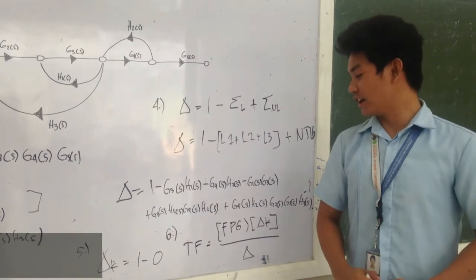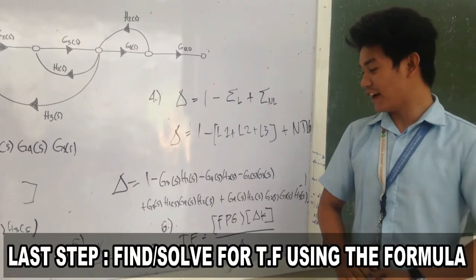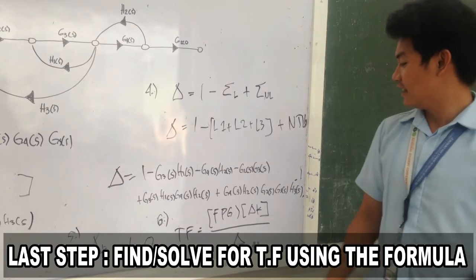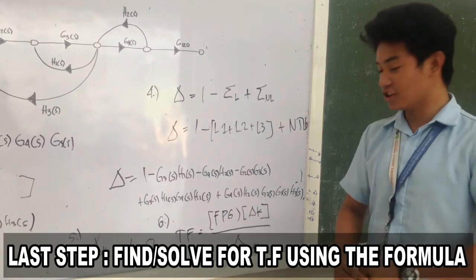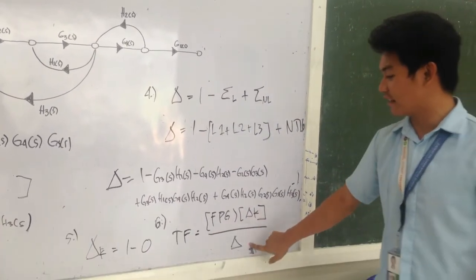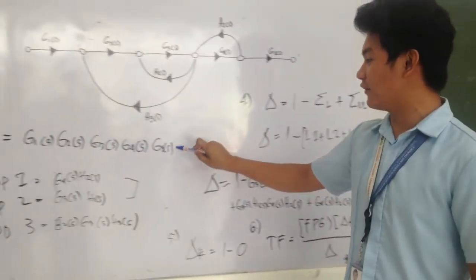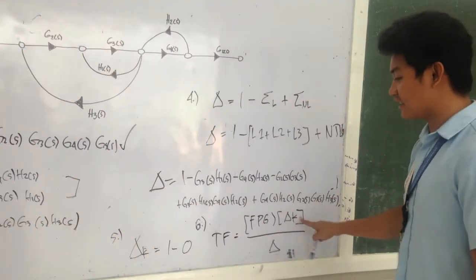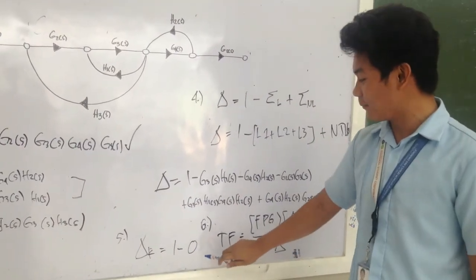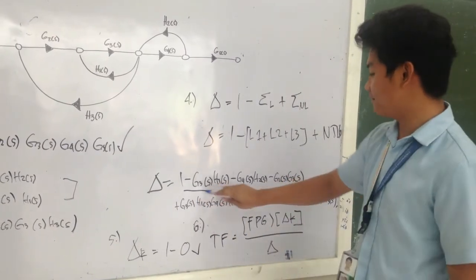Finally, we are at the last step: defining the transfer function. The transfer function is the forward path gain times the delta gain, all over delta. Our forward path gain is from step one, our delta gain from step five is 1, and our delta is from step four.